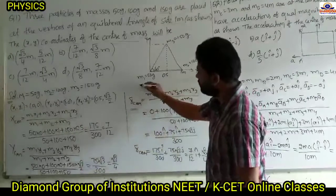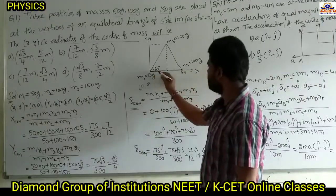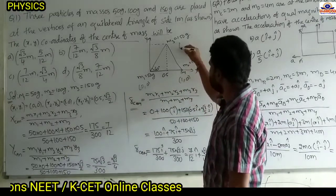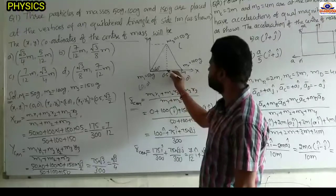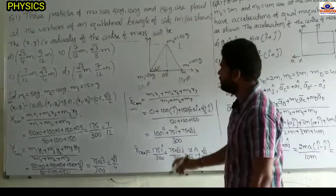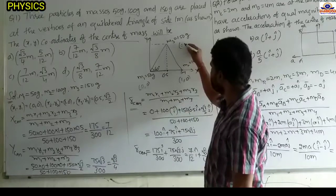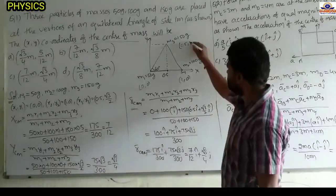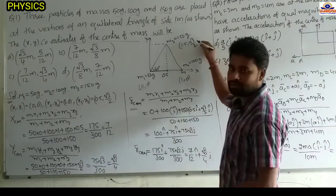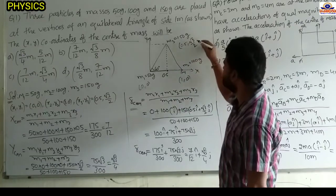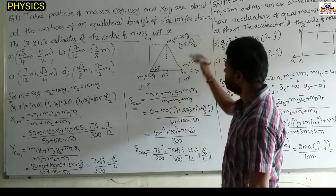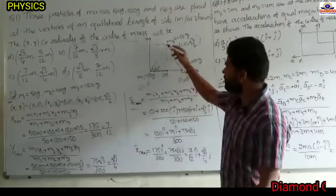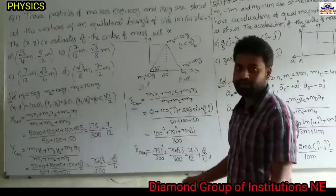m2 is 1 meter away from the origin, so x-coordinate is 1 and y-coordinate is 0. For m3, the distance from the origin along x is 0.5, so x-coordinate is 0.5. The height of the equilateral triangle is root 3 by 2 times the side length a. Since side length is 1 meter, we get root 3 by 2. We can find these coordinates using a right angle triangle.